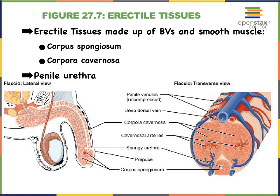The corpus spongiosum extends all the way into the glans penis. In this mid-sagittal view, one of the cylinders is called the corpus cavernosum. As a quick note, this is referred to as the dorsal side of the penis and this as the ventral side — terms that actually apply to an erect penis, which is why they may not seem intuitive at first.